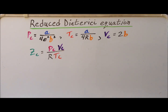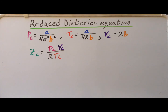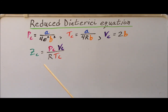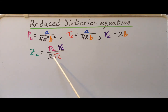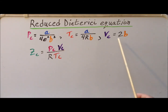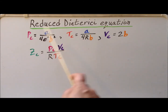Then we recall that the critical compression factor Z sub C is simply the compression factor Z evaluated at the critical point. So it's equal to P sub C V sub C divided by R times T sub C, where P sub C, V sub C, and T sub C have the values we noted before.